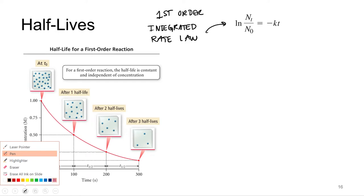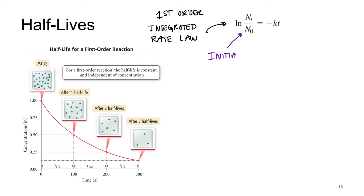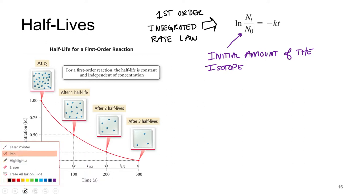All right, so n sub 0 would be the initial amount of the isotope. n sub t would be the amount of the isotope at time t, however long that is.